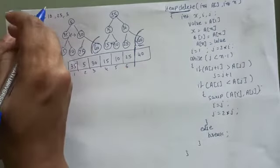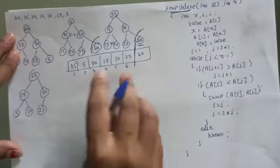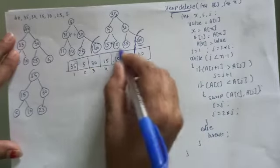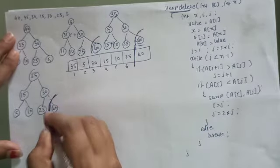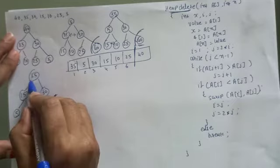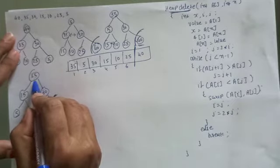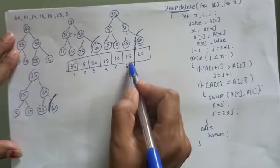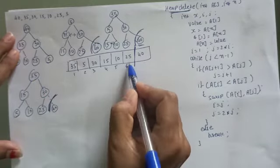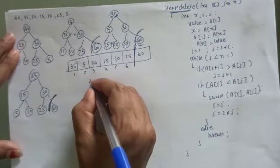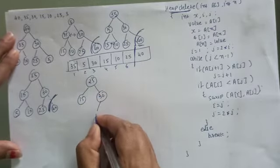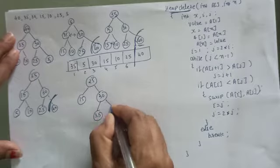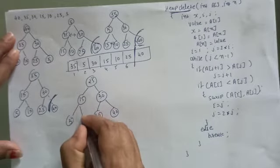Every time the deleted root is stored at the last position. Virtually we keep 40 there, but it is not considered within the heap size. For the next deletion, we again can only delete the root node. So 35 will be stored at the last available index, and 25 takes the place of 35. The heap size is decreased by 2, so 35 and 40 are no longer part of the heap tree.